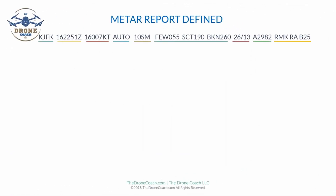Here we will review the METAR report again using a summary graph that will be available for you to print out and refer to. This graph is a handy reference to help you understand how to define and read a METAR report. First, the station identifier: K signifies an airport in the contiguous lower 48 United States, and JFK is the airport.